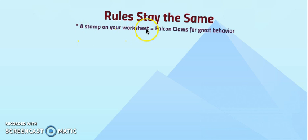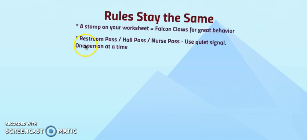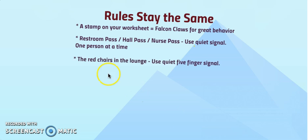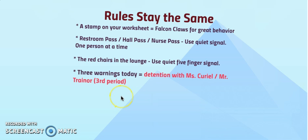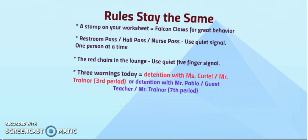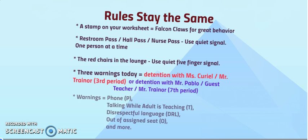We'll be stamping your worksheets and that'll mean falcon claws for your great behavior. The passes are still the same. Just make sure that you use this quiet signal and it is one person at a time. The red chair is in the lounge — you can use that. Just make sure that you use the five finger signal. It's a quiet signal and we'll put you on the list. Three warnings for today, as always, and it will be detention with those adults on that list.